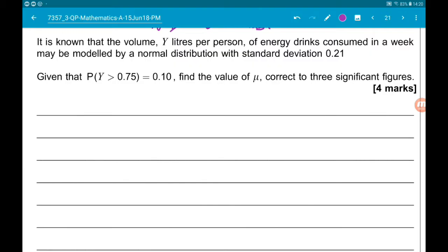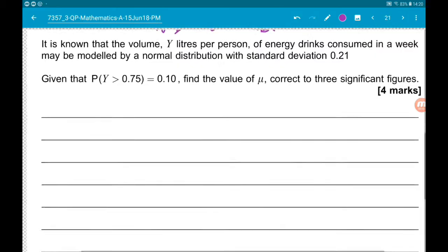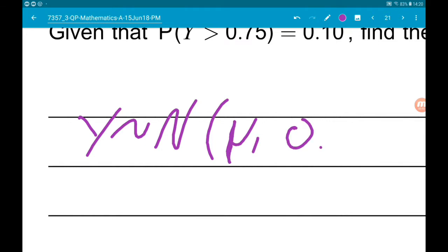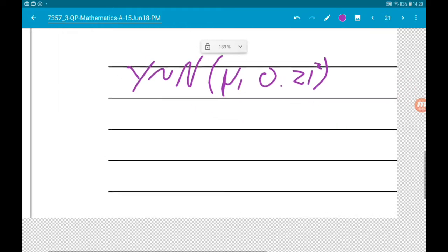We know Y has a normal distribution with mean mu and variance 0.21 squared. Let's sketch that.